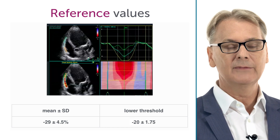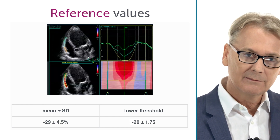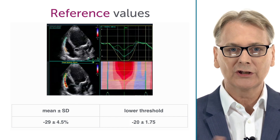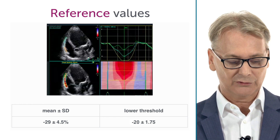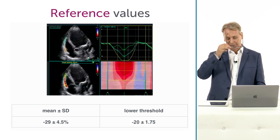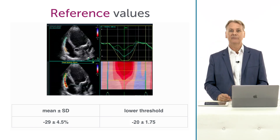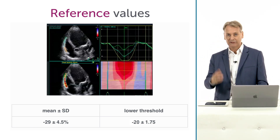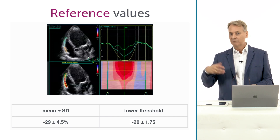The negative value means contraction — shortening of the right ventricle wall. A lower threshold of minus 20 percent has been defined, which I personally believe is a little too low. Probably you would need a value of minus 25 or minus 26 as the threshold, but we'll see how it turns out in the future.